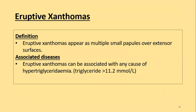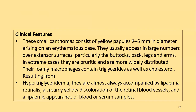The third type are eruptive xanthomas, which appear as multiple small papules over the extensor surfaces. They are associated with any cause of hypertriglyceridemia — triglyceride level greater than 11.2 mmol/L. Eruptive xanthomas are the only xanthomas associated with hypertriglyceridemia; all other xanthomas are associated with hypercholesterolemia. They consist of yellow papules 2–5 mm in diameter arising on an erythematous base, usually appearing in large numbers over the extensor surfaces, particularly the buttocks, back, legs, and arms.